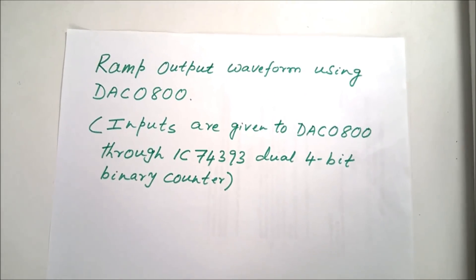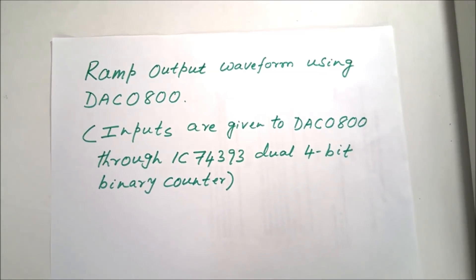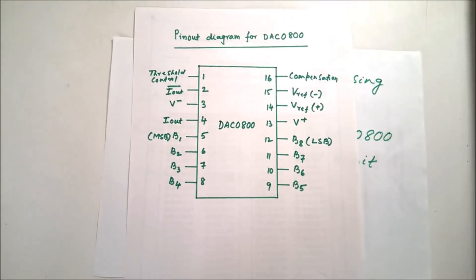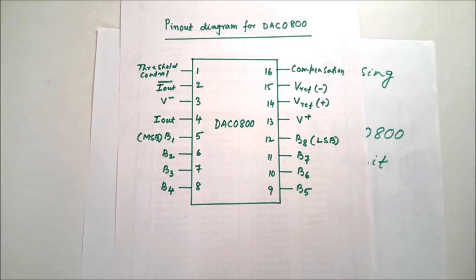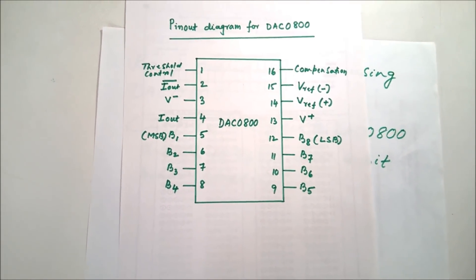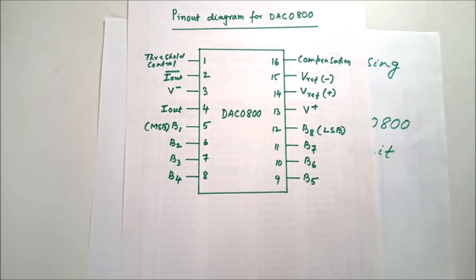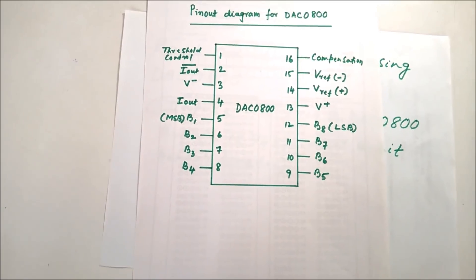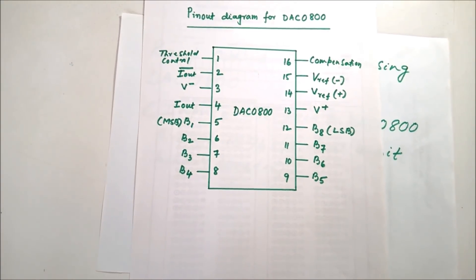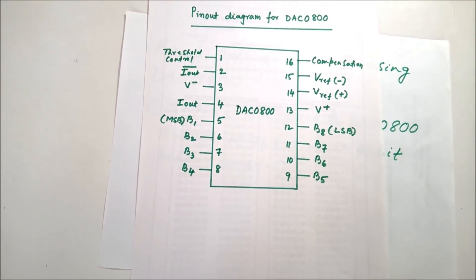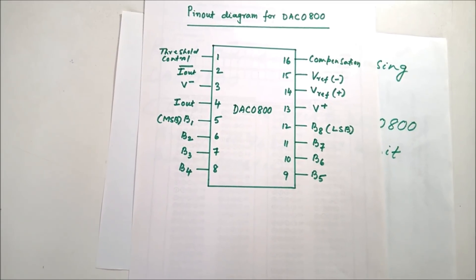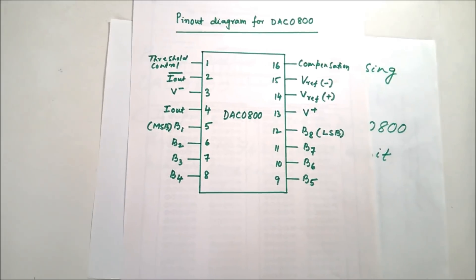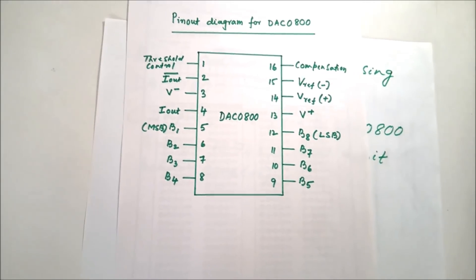First we have to know the pin diagram for DAC0800. This is the pin diagram we will be using while connecting. You can see there are 8 pins for binary input — B1 is the MSB and B8 is the LSB. The remaining pins we will discuss during the connections.